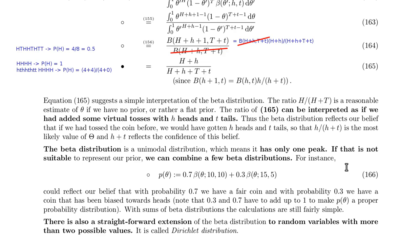So here we have seen how to deal with the problem of learning a probability based on data — based on the evidence that we get. This is for just a binary variable, but in the next section we look at how to translate this to Bayesian networks.